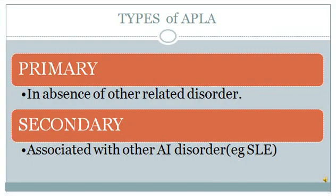Coming on to the types of APS syndrome. There are two main types: primary and secondary. If the disease occurs in the absence of any other related disorder, then we will classify it as primary APS syndrome. And if it is associated with other autoimmune disorders like SLE, rheumatoid arthritis, or scleroderma, then we will see it as secondary APS syndrome.